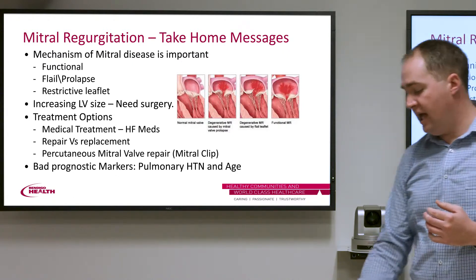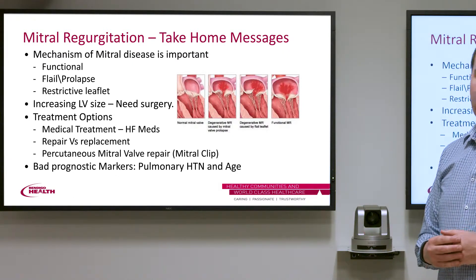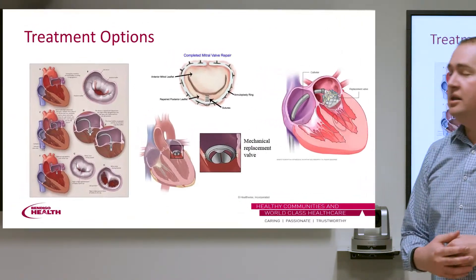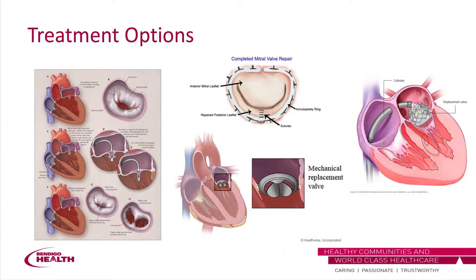Once MR reaches the severe level, mechanical solutions are needed. This is an exciting time for mitral valve disease — we're moving from traditional open heart surgery with mechanical valves, which carry relatively high risk, to new percutaneous options. The MitraClip allows us to go through the femoral vein and place a small clip to narrow the mitral valve aperture, reducing the amount of mitral regurgitation. Another surgical option is mitral valve repair using an annuloplasty ring.